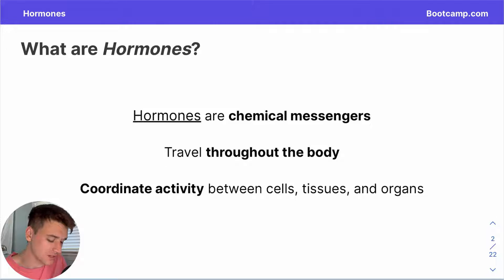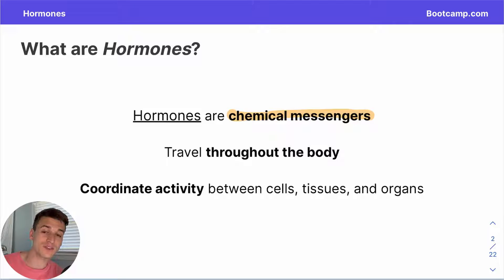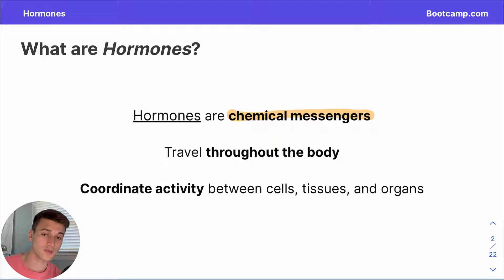Hormones are your body's chemical messaging system. If this video were about the nervous system instead of the endocrine system, we would be discussing voltage-based signals. But here in the endocrine system, we're counting on molecules binding to appropriate receptors and eventually causing physiological changes. Some hormones take a more indirect approach to passing along a signal, and some seek to do it themselves with a more direct approach.